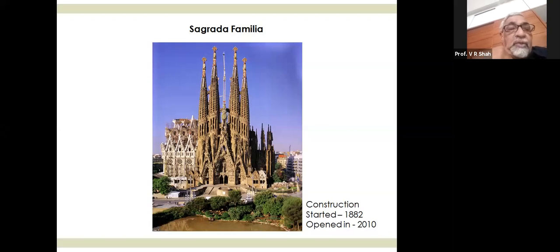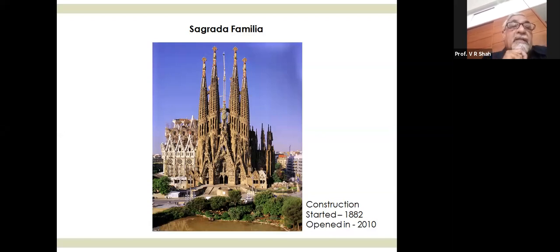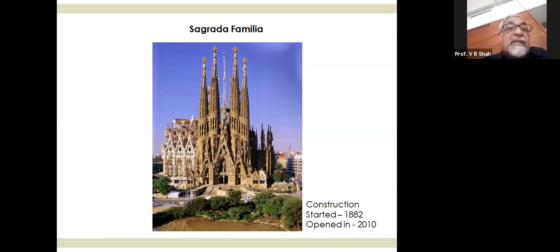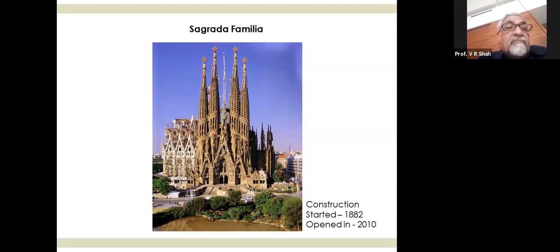Moving on from steel, Antonio Gaudi designed all his structures so that they would be in compression only. He used to suspend chains to find the form, then design the structure so that the construction material — which is only good in compression — would be fully utilized. He would suspend material, find the form, and then put the material in compression.